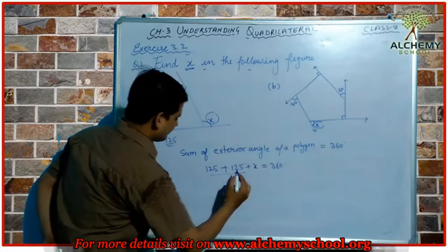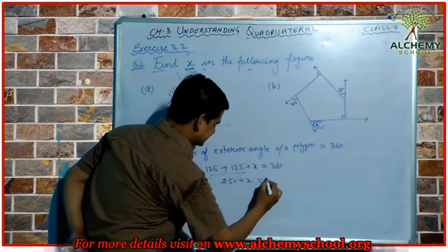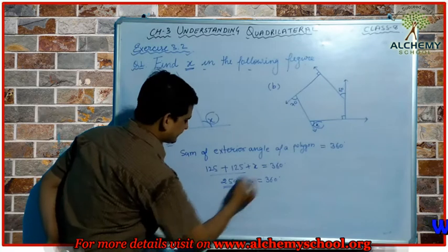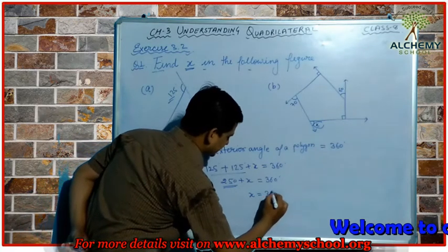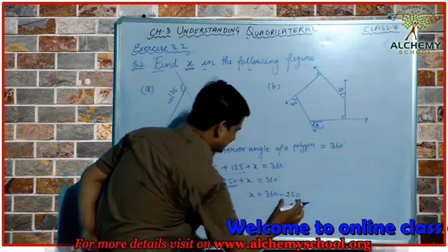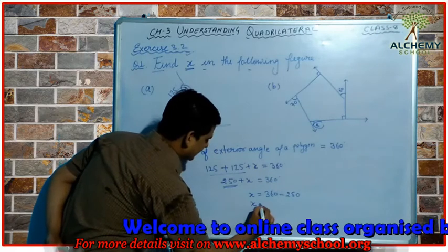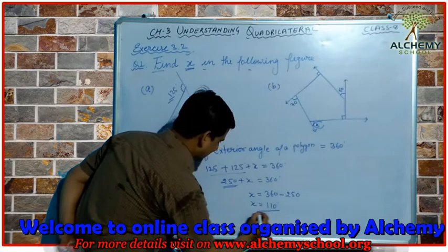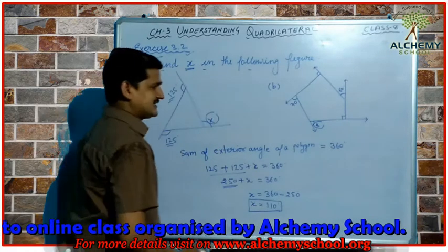Adding these two values, 250 + x = 360°. Taking 250 to the other side, x = 360 − 250 = 110 degrees. So the value of x for the first figure is 110 degrees.